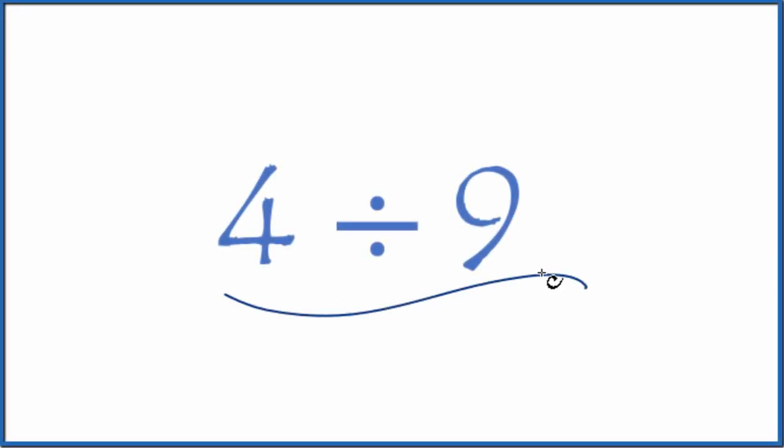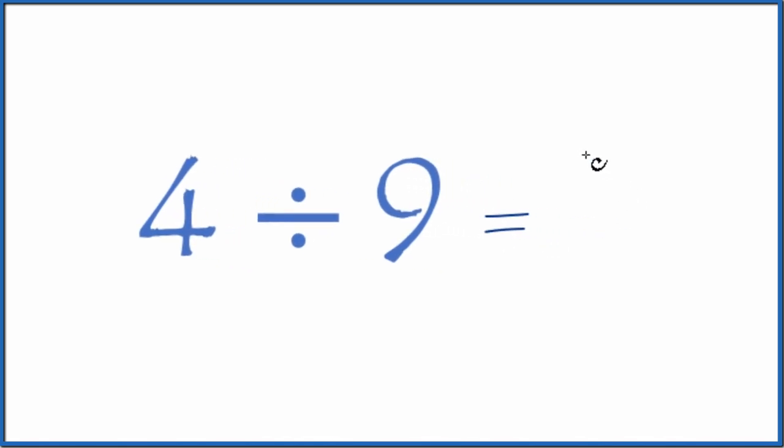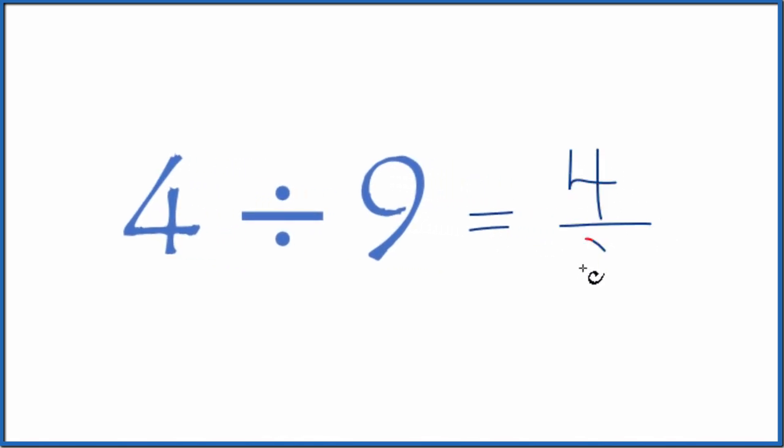Let's divide 4 by 9. First off, let's make this into a fraction. 4 divided by 9, that's 4 over 9, 4 ninths.